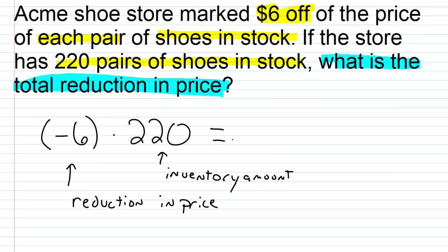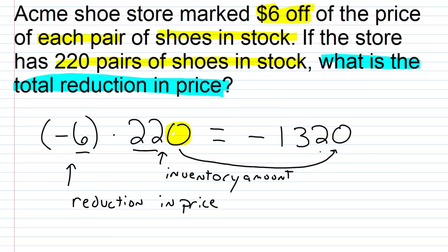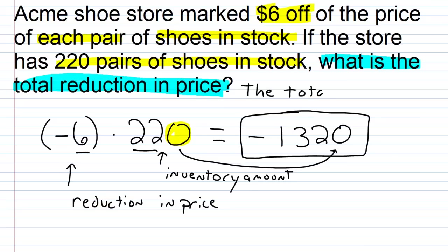We have a negative times a positive, so the result is negative. There's a trailing zero, so we multiply 6 times 22: that's 6 times 20 equals 120, plus 6 times 2 equals 12, giving us 132. Then we attach the trailing zero to get negative 1,320 dollars — that is the total reduction in price. So the total reduction in price is $1,320.